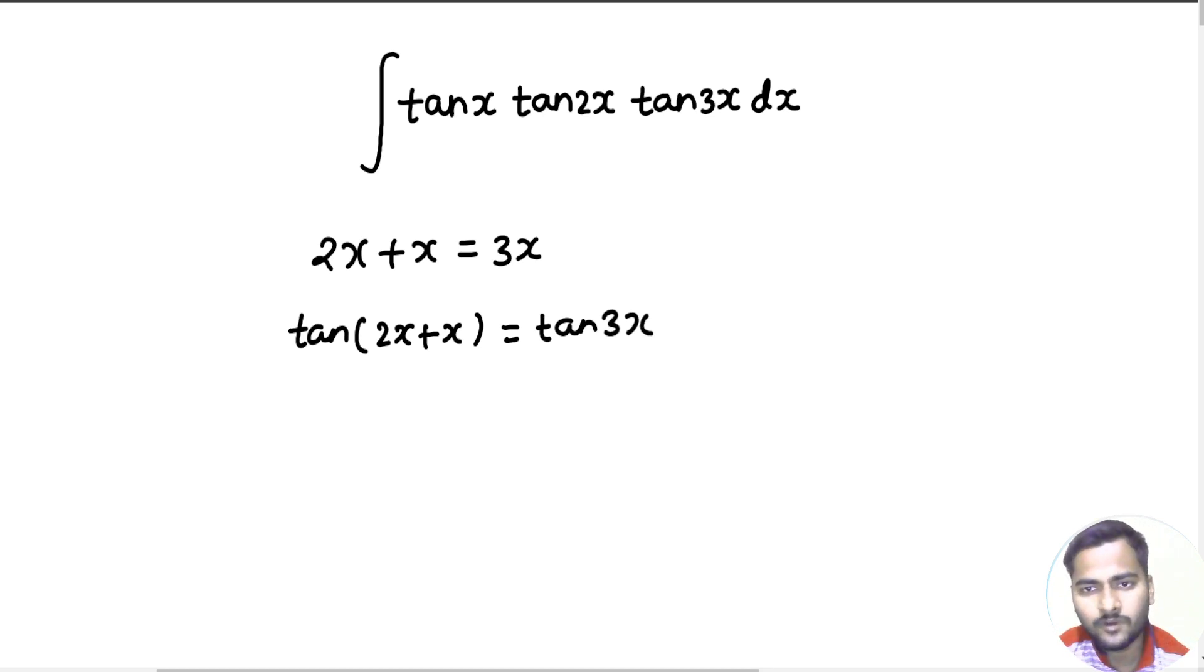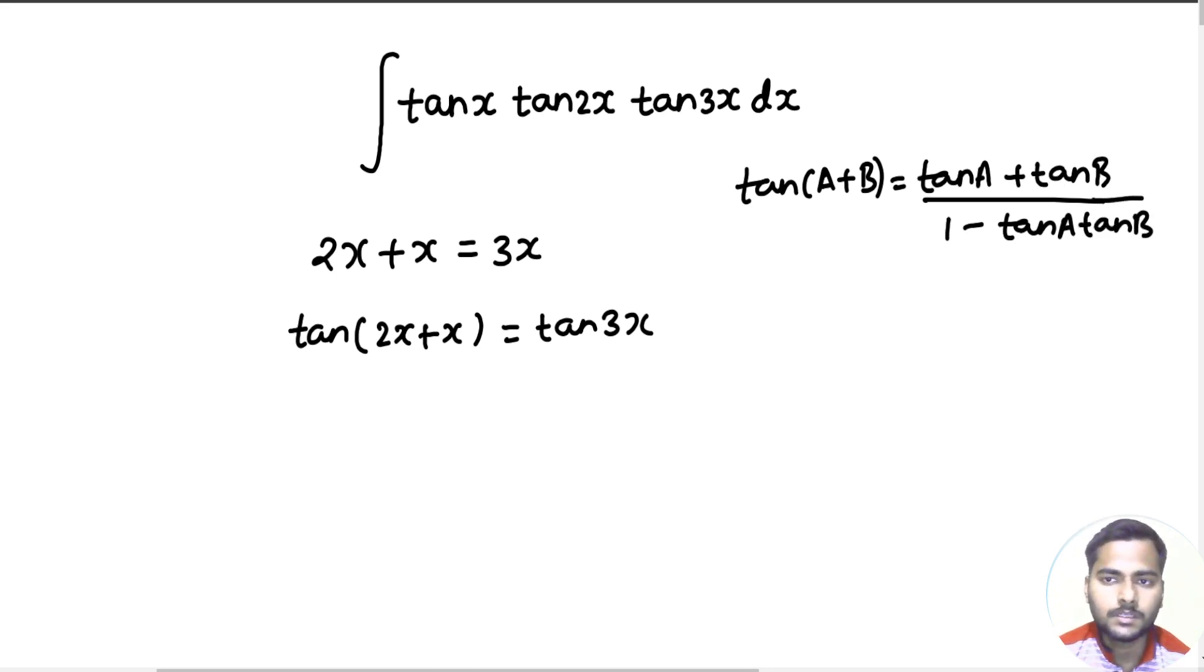Now you know one formula: tan(a+b) gives you tan a plus tan b divided by 1 minus tan a tan b. So this will give you tan 2x plus tan x divided by 1 minus tan 2x tan x.